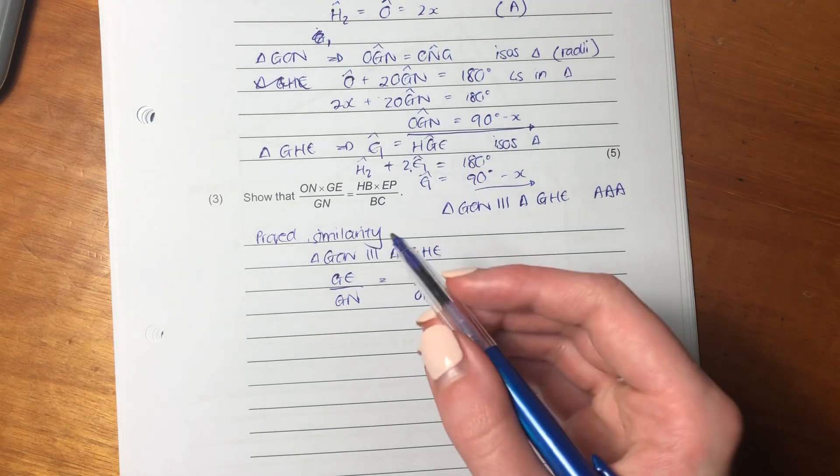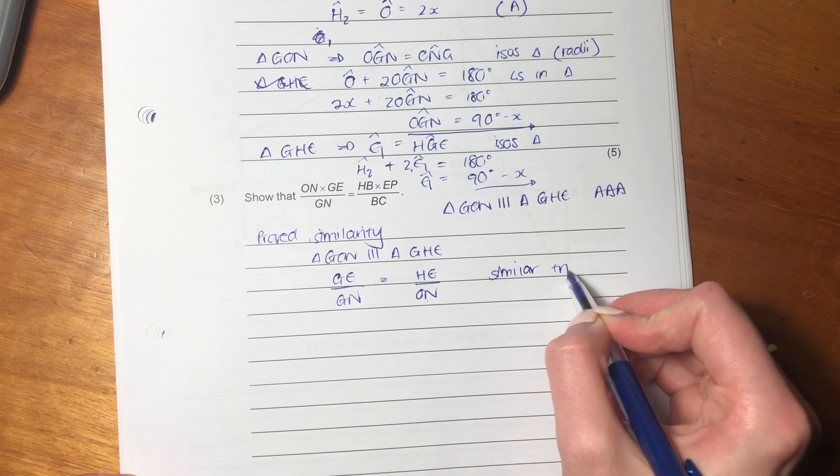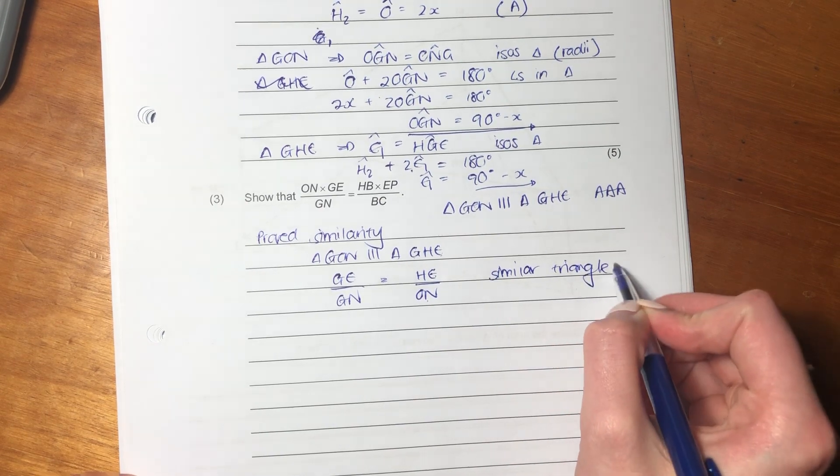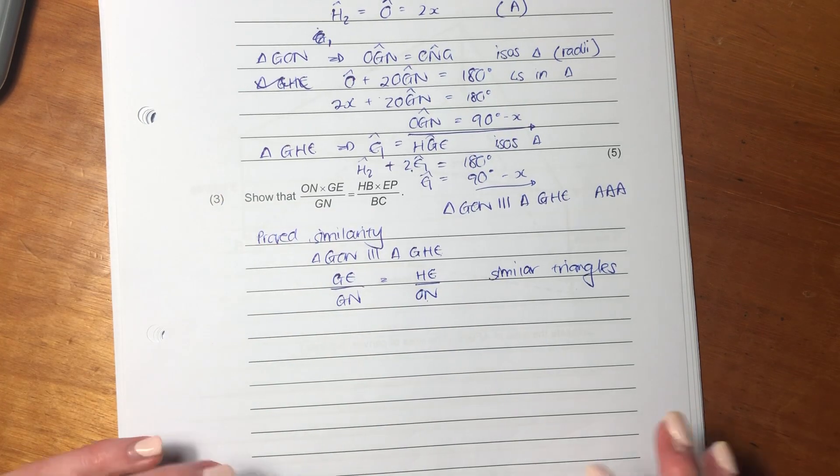But that's okay. So this is just because of similar triangles. It's somewhere to start. So we've got some of the things we want, not all of the things we want. That's okay.